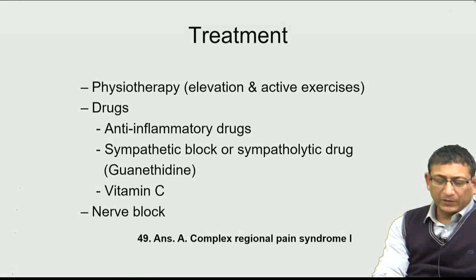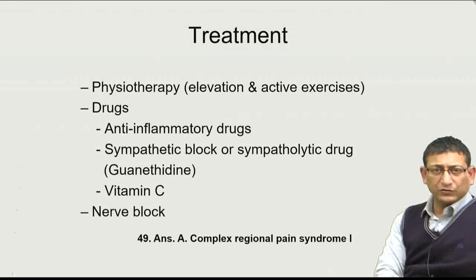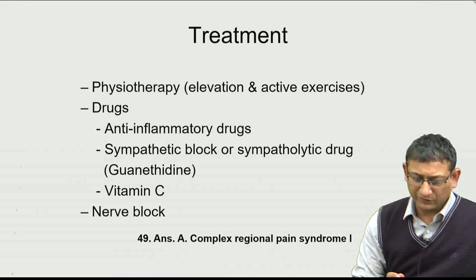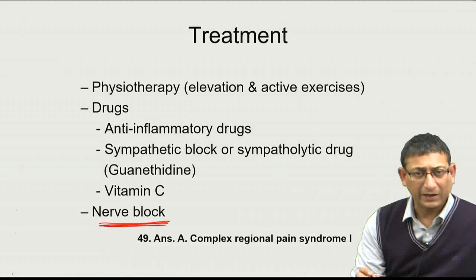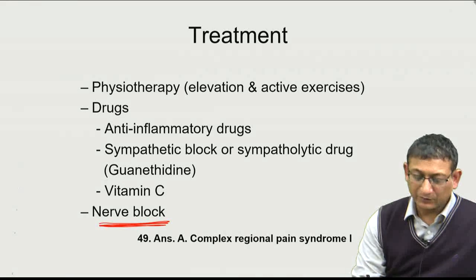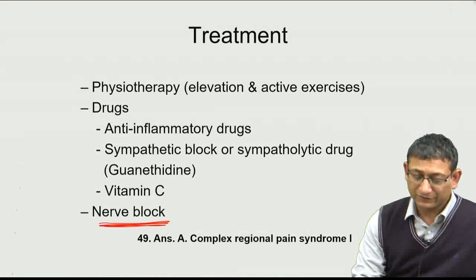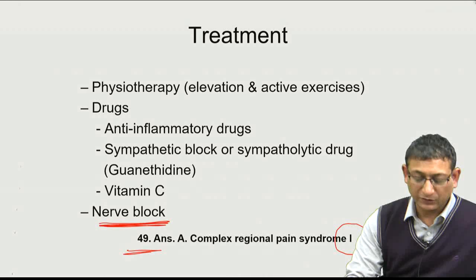Vitamin C has been shown to be effective in reducing complex regional pain syndrome. Studies show vitamin C limits tissue injury and prevents the development of CRPS. Nerve blocks help relieve symptoms by blocking the sympathetic nervous system. Because there is no injury to the nerves but an aberrant nervous system response, we term it complex regional pain syndrome type 1. The answer to question number 49 is A.